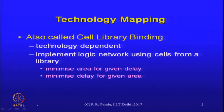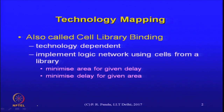Technology mapping is also called cell library binding, because these are cells that you choose from an individual library and realize a logical netlist in terms of those cells. This is the technology dependent part of logic synthesis. In the first phase, you pretty much keep the same irrespective of what is the target library, but the second phase is target library dependent. Here too, you could specify different objective functions - it could be minimize area for a given delay or minimize delay for an area constraint.